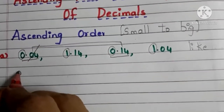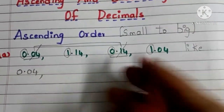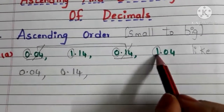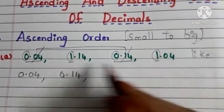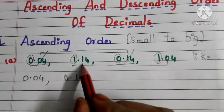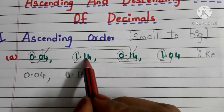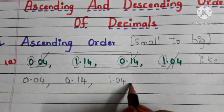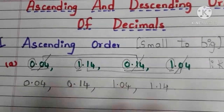So strike off this number and write 0.04. Next smaller number is 0.14. Strike off and write. Now we have two numbers: 1.14 and 1.04. The whole number parts are equal, so compare the 10th digits. Here 1 is greater and 0 is smaller, so 1.04 is smaller than 1.14. Strike off and write. Finally we have 1.14. So this is the ascending order of the given numbers.